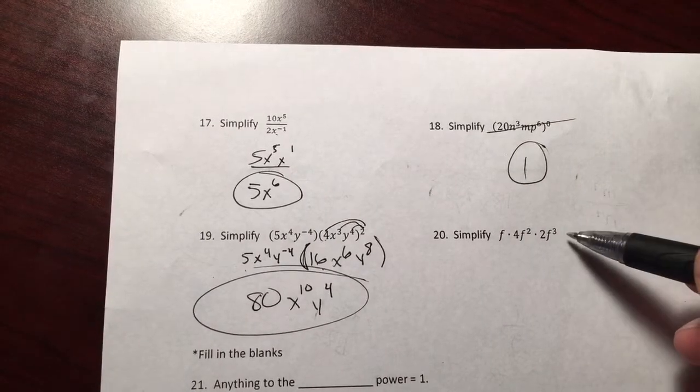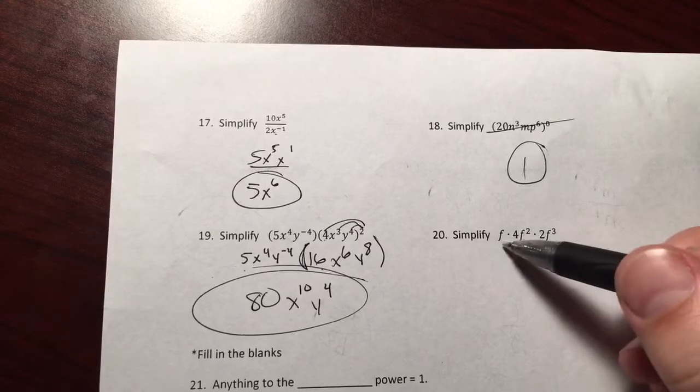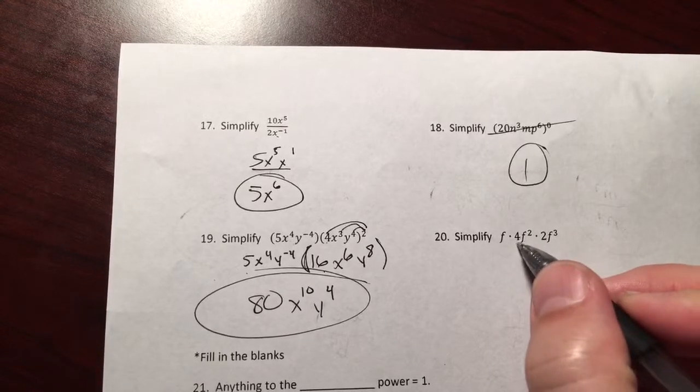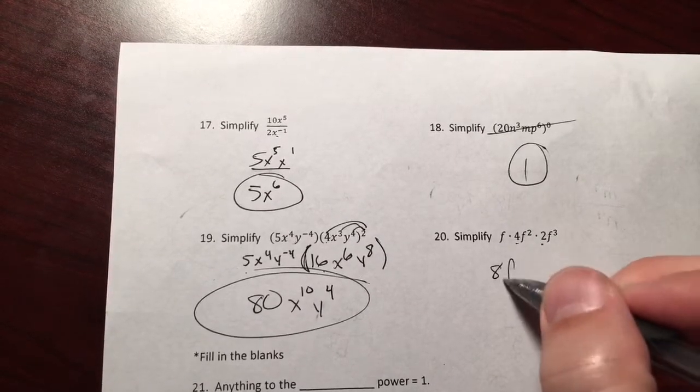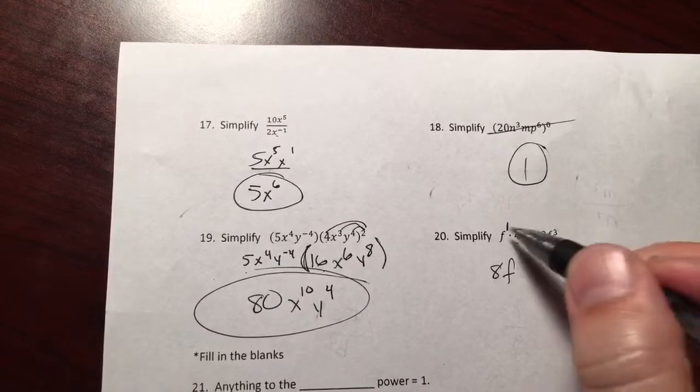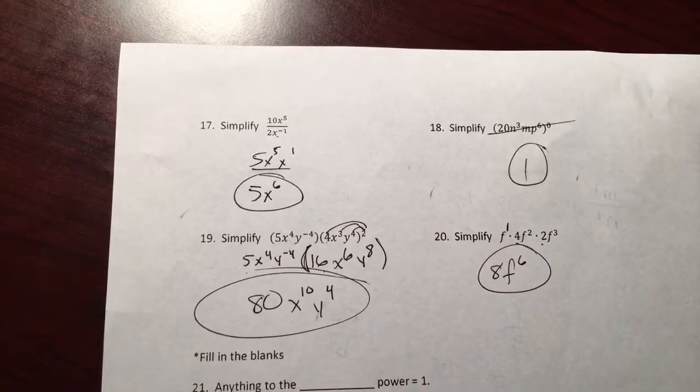The last one: power to a power, nope; zero power, nope; negative power, nope; same base, yep. F-f-f. So knock out the coefficients first. 4 times 2 makes 8. F to the first power, second power, third power: 1 plus 2 plus 3 makes 6. And voila!